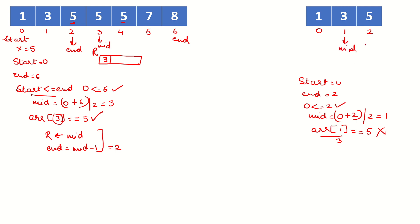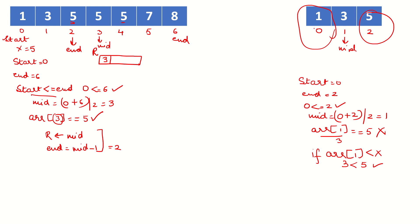Since the value at the middle point is not X, we check if the value at arr[mid] is less than X. We can see that 3 is less than 5, so the condition becomes true — we will not search on the left side but instead look to the right. Start is updated to mid plus 1, making start equal to 2. End remains at 2.